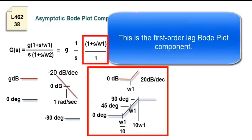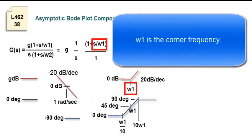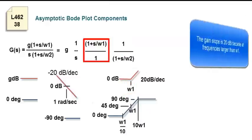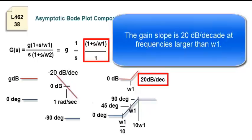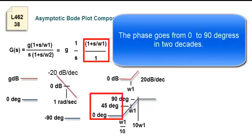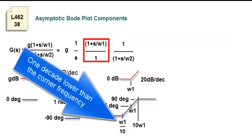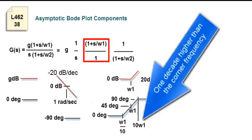This is the first-order lead Bode plot component. It has a zero dB gain and zero degree phase at low frequency. Omega-1 is the corner frequency. The gain slope is 20 dB per decade at frequencies larger than Omega-1. The phase goes from zero to 90 degrees in two decades — one decade lower than the corner frequency to one decade higher than the corner frequency.